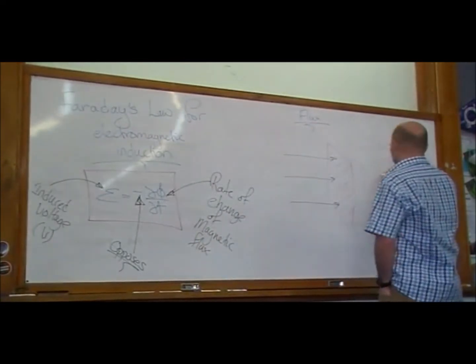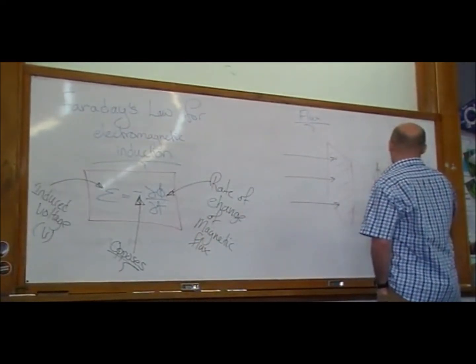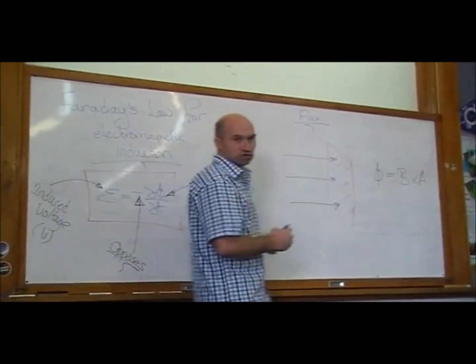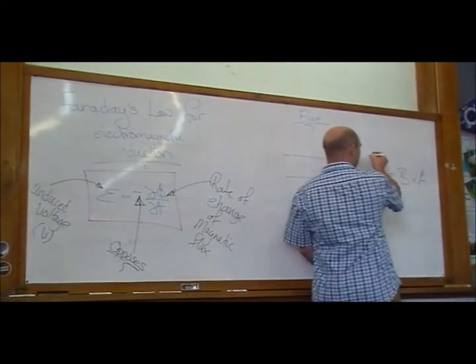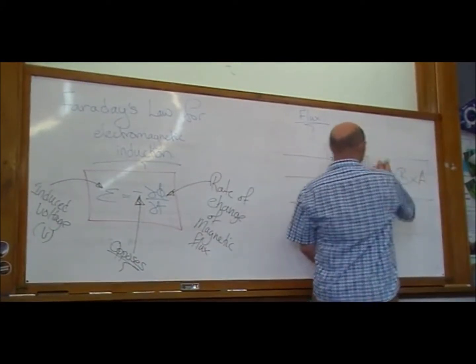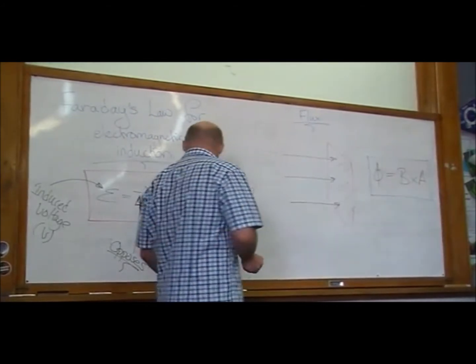So magnetic flux phi is B cross A. Remembering that the cross means that the magnetic field and the area have to be at right angles to each other.